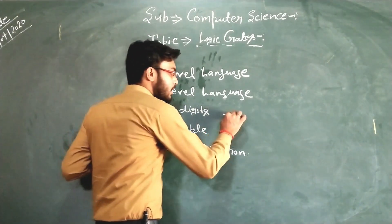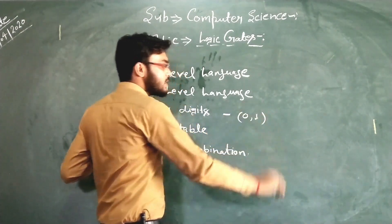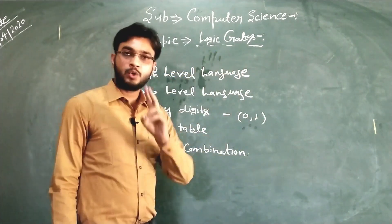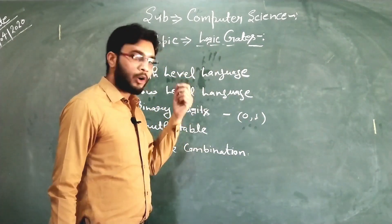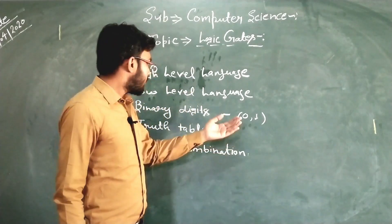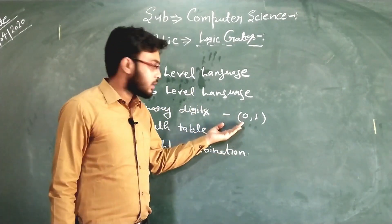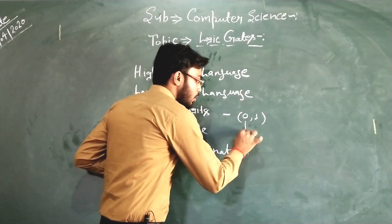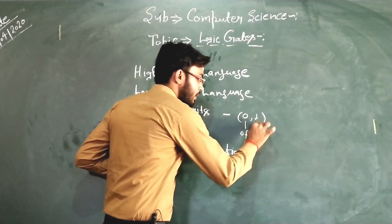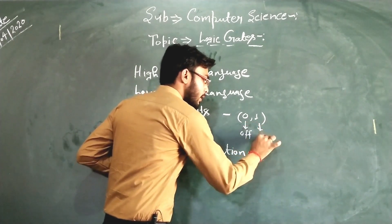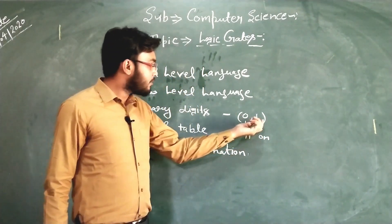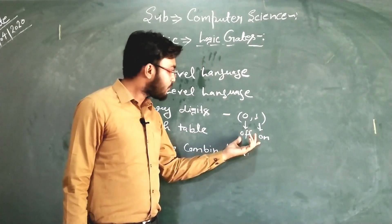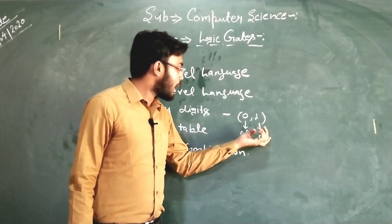In binary digits, there are two numbers: 0 and 1. The switch circuit performs over two conditions — either on or off. When we talk about binary digits, 0 means off and 1 means on. For logic gates, you must understand what 0 and what 1 mean.